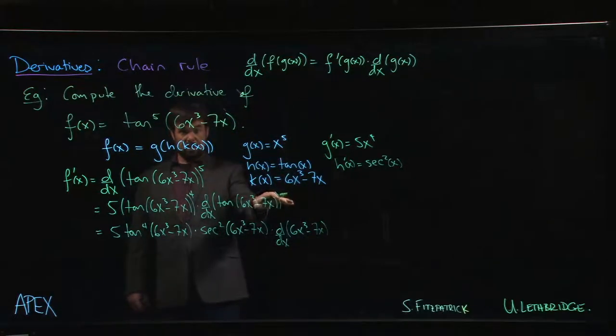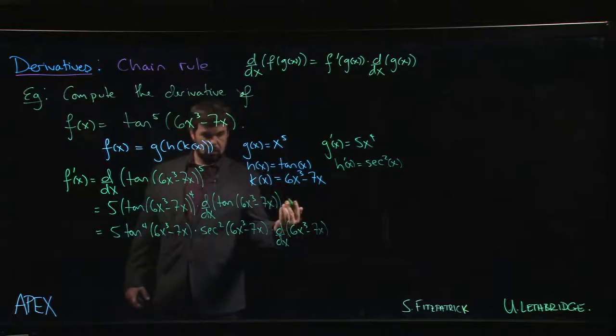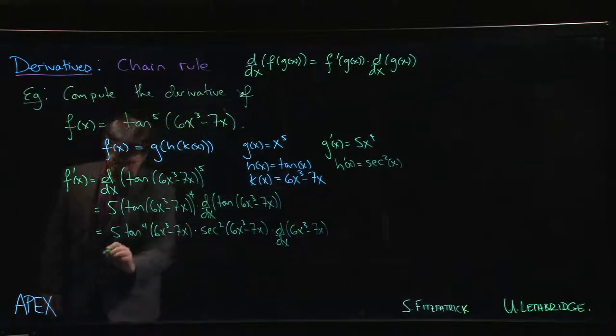And finally, we have a derivative that doesn't involve a composition, so we just use power rule, sum rule, constant multiple rule, and we're done. We have 5—